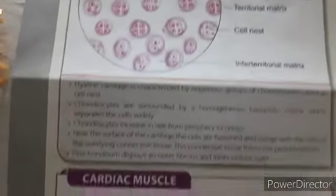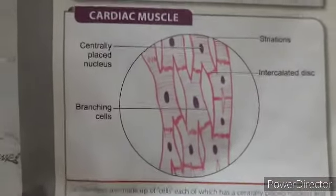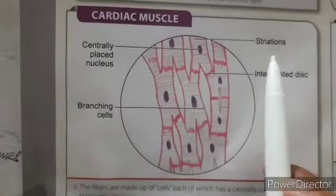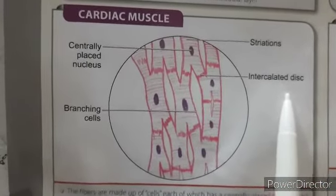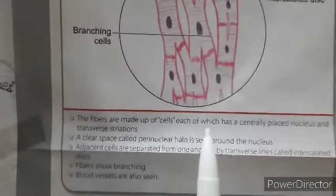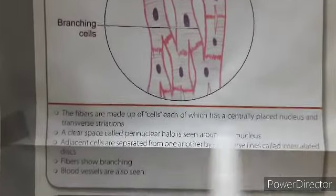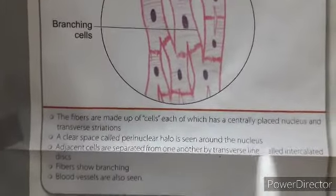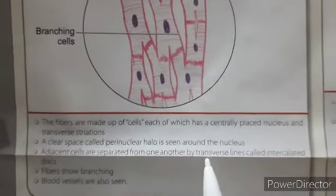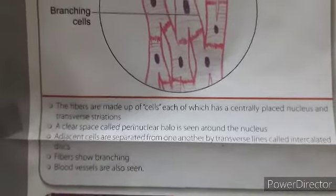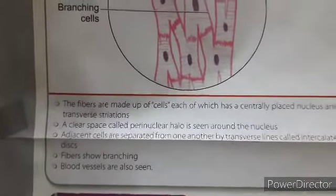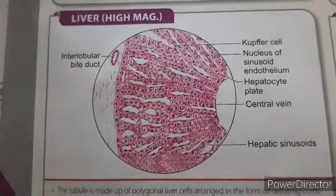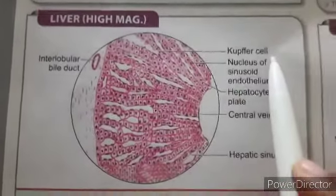Now moving to cardiac muscle. Key features include centrally placed nucleus, striations, intercalated discs for fast conduction, and branching cells. The fibers are made up of cells each having a centrally placed nucleus and transverse striations. A clear space called the perinuclear hollow is seen around the nucleus. Adjacent cells are separated by transverse lines called intercalated discs. Branching blood vessels are also seen.